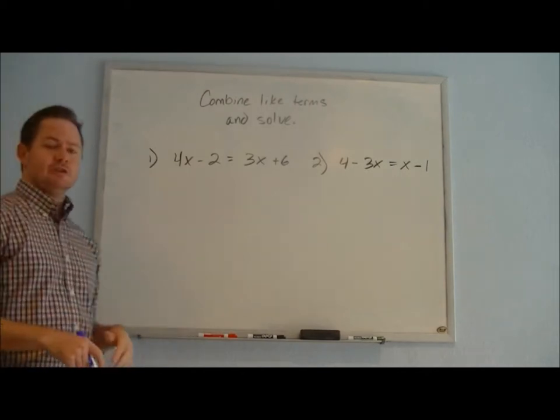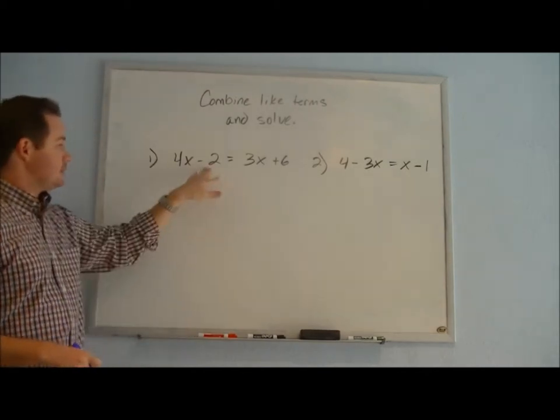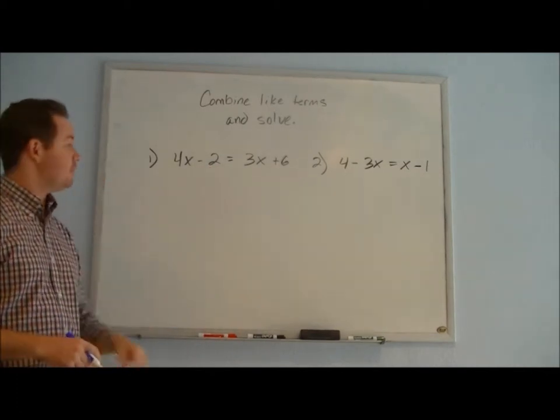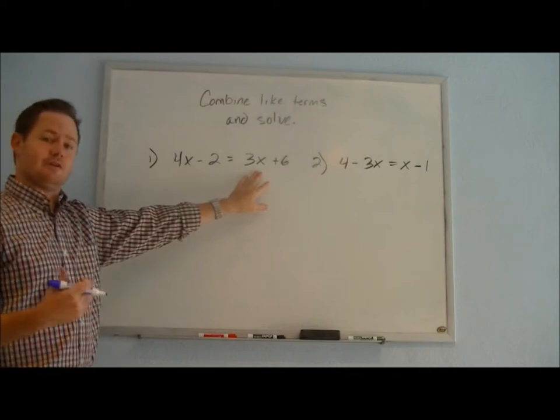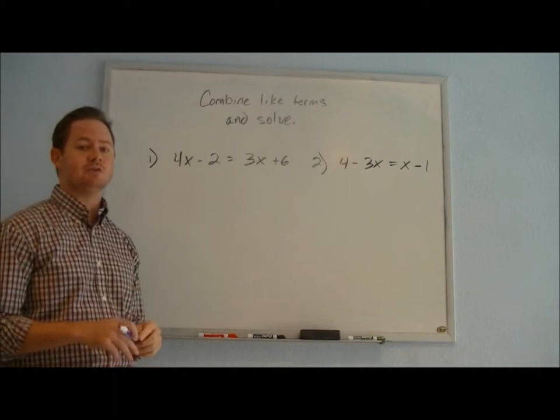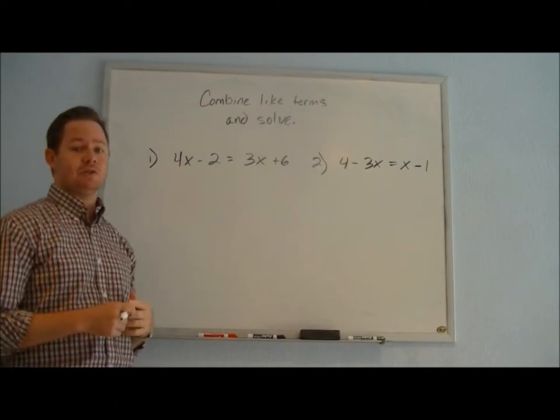When we combine like terms, that means we want to combine the constants or the numbers with each other, and we want to combine the variables as long as they're the same variable. In this case, 3x and 4x both have x's, so they are like terms and we can combine those together as well.